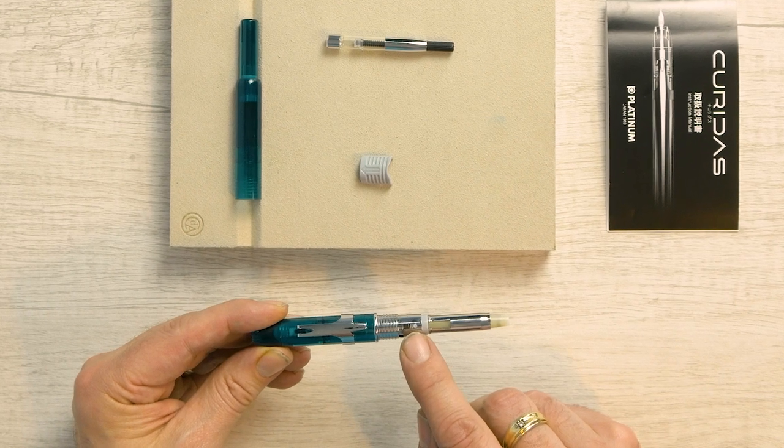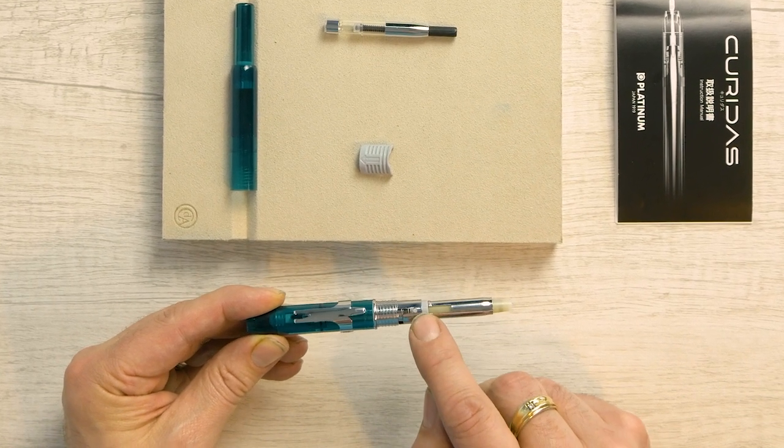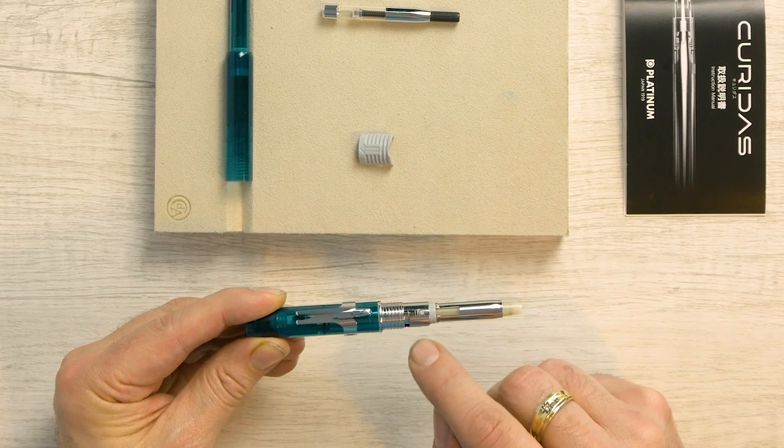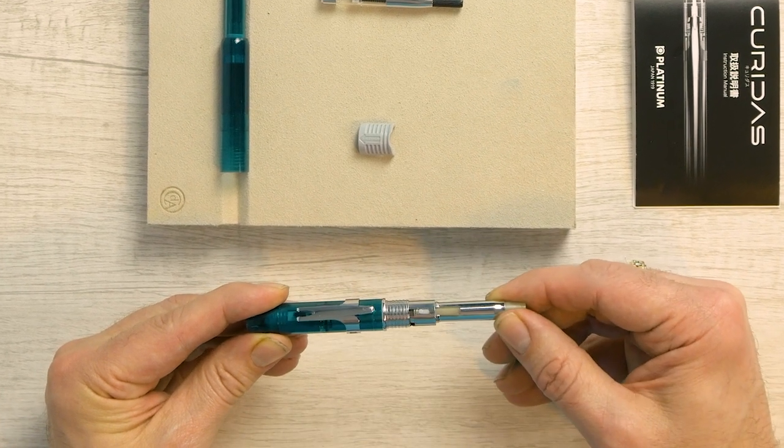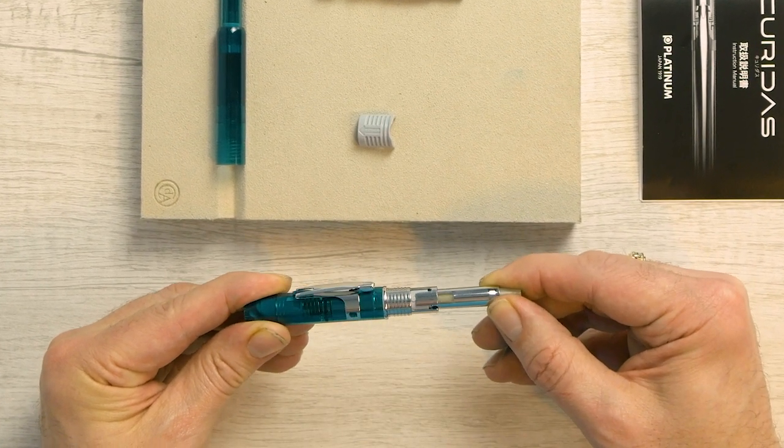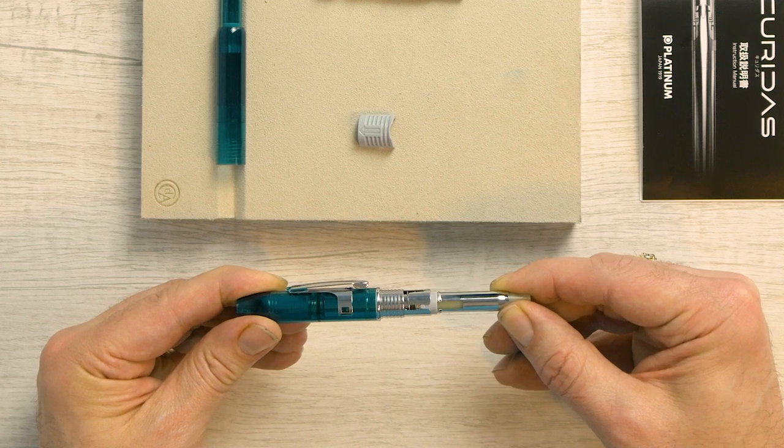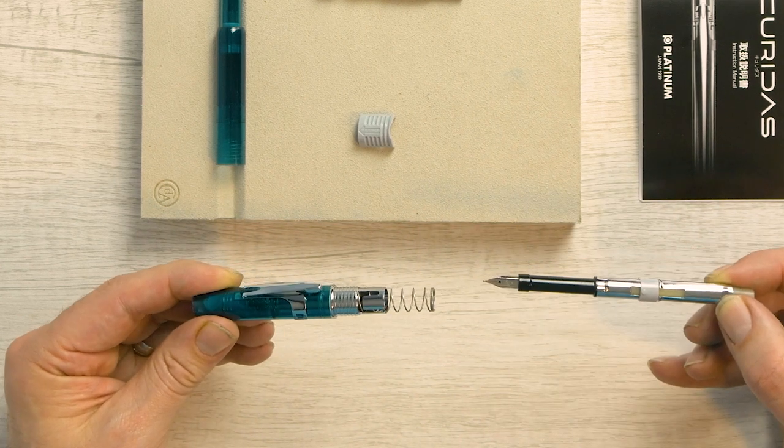So you see right here on this cartridge cover, there's a little pin and there's a track here. You push in and rotate and then the nib unit comes out.